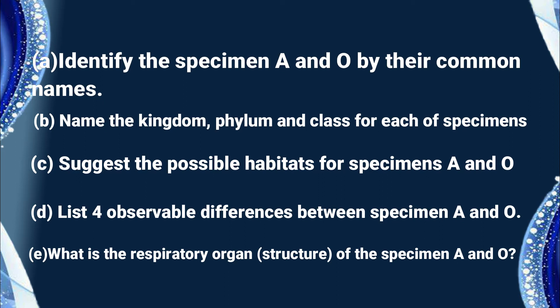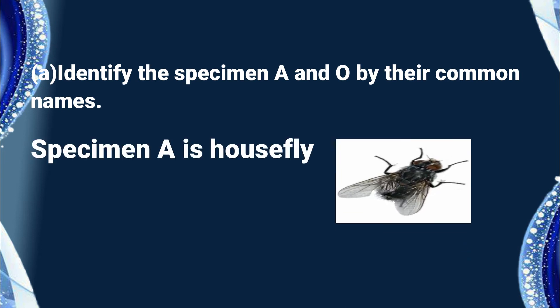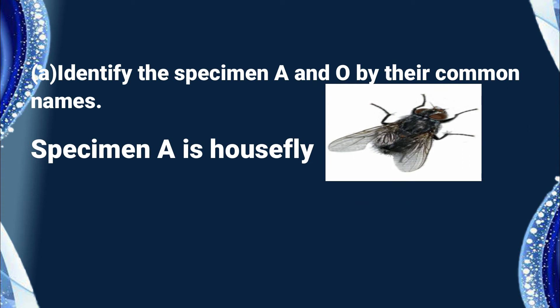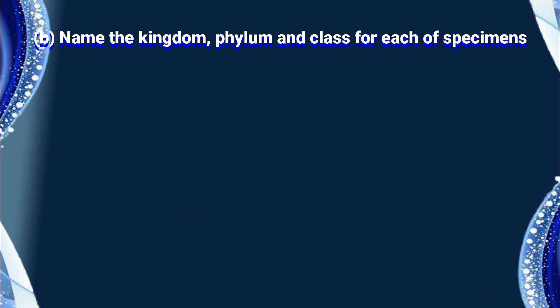Those are our questions, and those are our specimens you have observed in the diagrams. Let us proceed with our lesson to see the answers. The answer for question number one — identify specimen A and specimen O by their common names: specimen A is the housefly, as you see in that diagram, and specimen O is the spider.